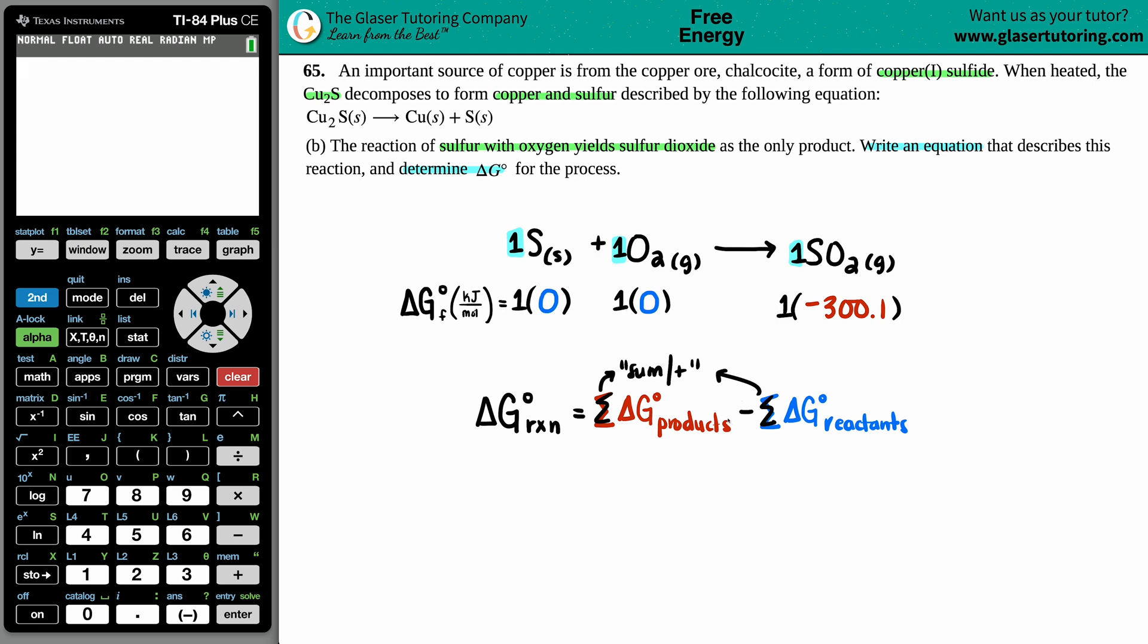But now I just have to add the reactants together, but zero plus zero is just zero. And this side I don't have to add because it's only one substance. This is negative 300.1. And now I can use my formula. Delta G for the whole entire reaction is the product which is negative 300.1 minus the reactant which is zero.